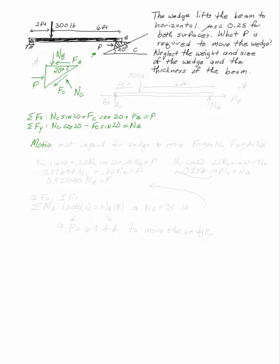Motion absolutely has to be impending, because we're asked to find how much it takes, how much P it takes to actually move the wedge. So motion must impend for that wedge to move, which means we can assume that FC equals mu S times NC, and FB equals mu S times NB. Both of my mu's are the same, so if I plug those into my equations of equilibrium, I get NC sine 20 plus 0.25 NC cosine 20 plus 0.25 NB equals P. And NC cosine 20 minus 0.25 NC sine 20 equals NB.